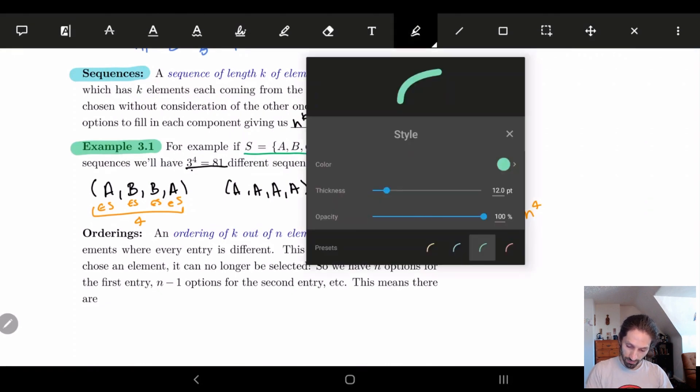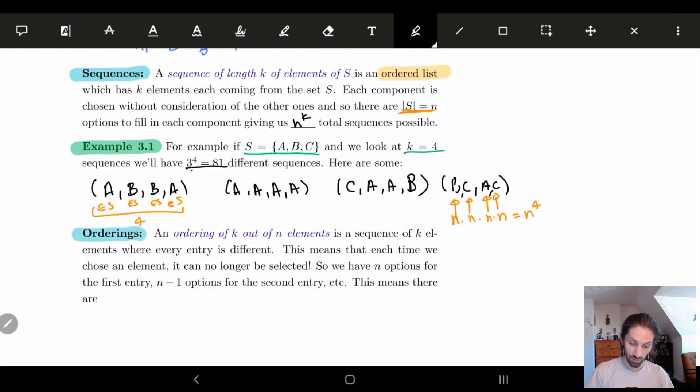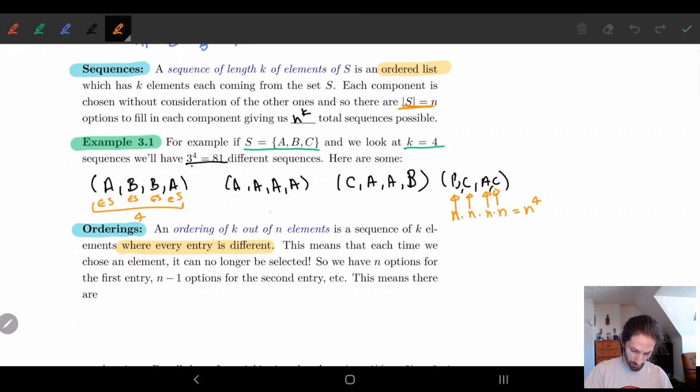So next up, what we have are orderings. So what's an ordering? An ordering of k out of n elements. Think of this as we're looking at a particular sequence, a sequence of k elements where every entry is different. So that's the key point, where every entry is different. So none of the examples in our previous sequence work because they all have repeated entries. And you can kind of see when k is bigger than n, we're always going to get repeated entries. So this only makes sense when k is less than or equal to n most of the time.